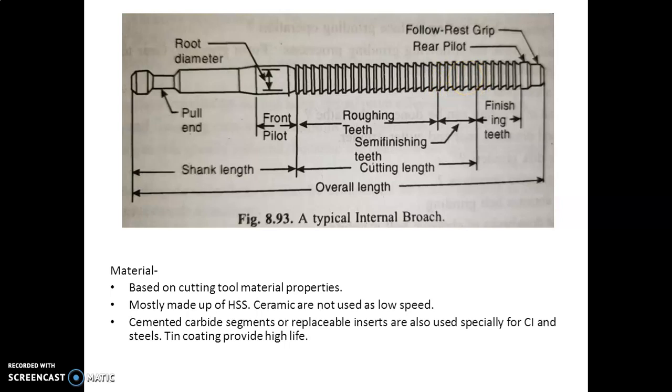Finally, there are finishing or sizing teeth which are all of the same size and have the shape of the finished hole. Sometimes a few burnishing teeth may be provided after the finishing teeth. These have no cutting edge but are button-shaped and from 0.025 to 0.075 mm larger than the size of the hole. This is the typical type of internal broach.